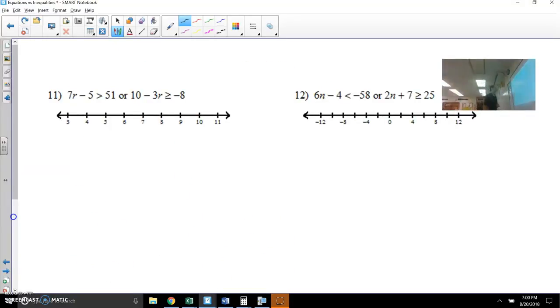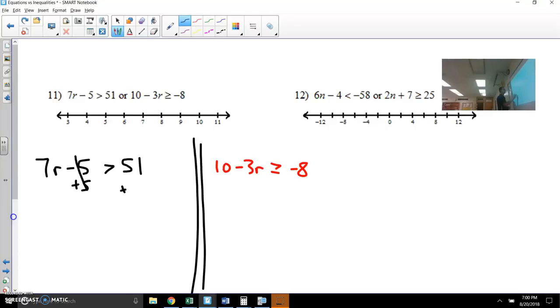This one's very similar, but we have two problems to do. We don't have to split it because they're already split for us. So let's talk about each one separately. And then let's graph it and see what it looks like on the number line. So let's start. I'm going to add 5 to get greater than 56. I'm going to divide by 7 and you get r is greater than 8. So r has to be greater than 8 or, or. So we have another situation.